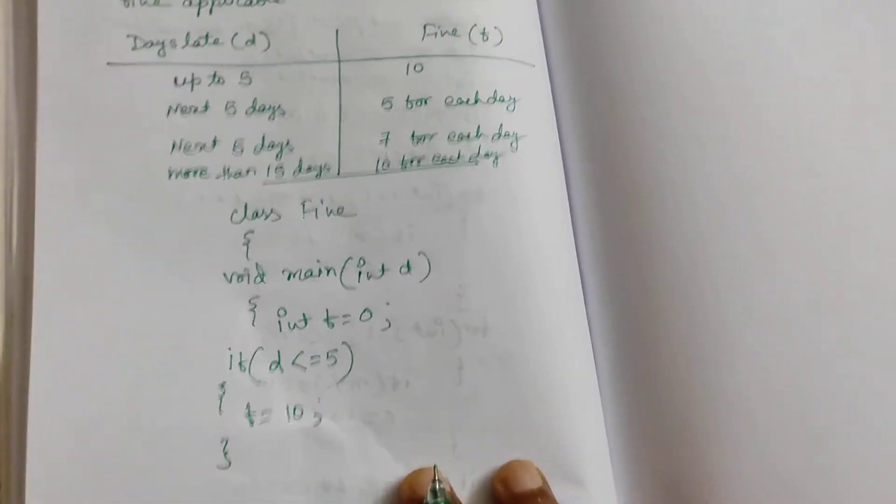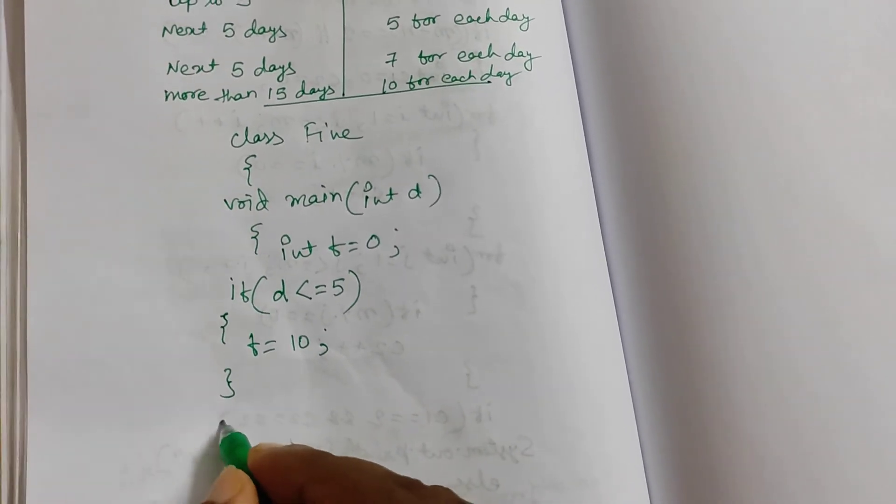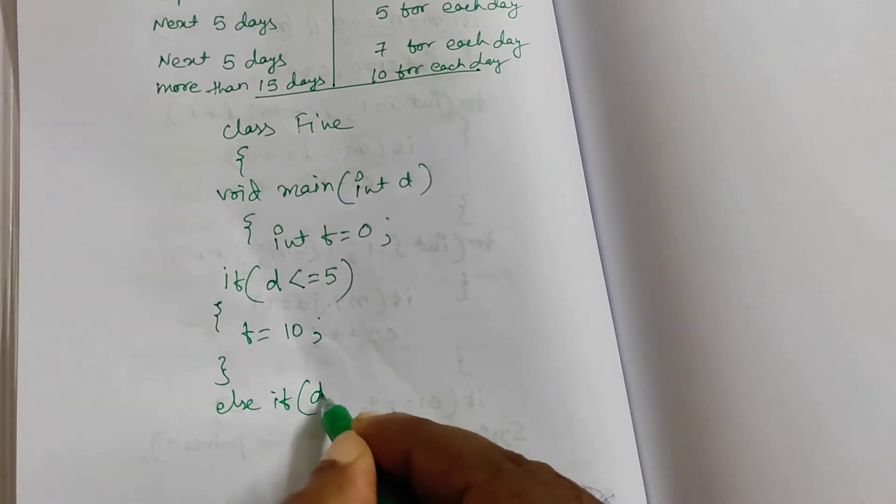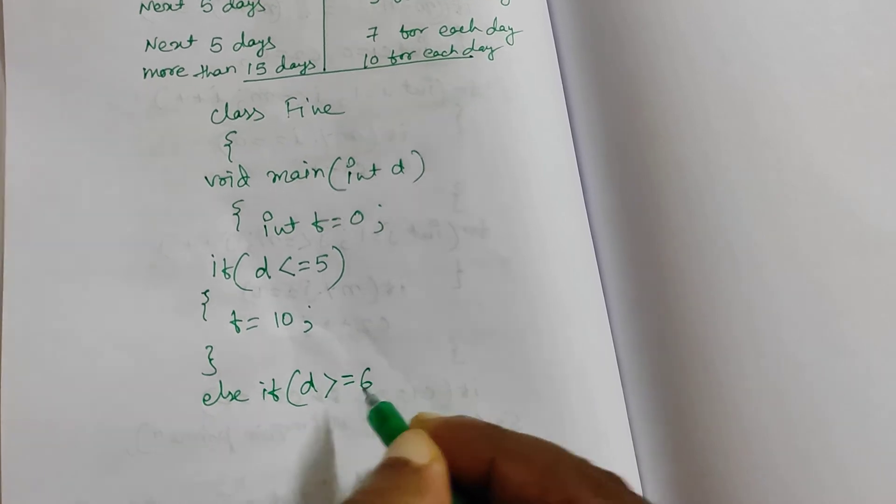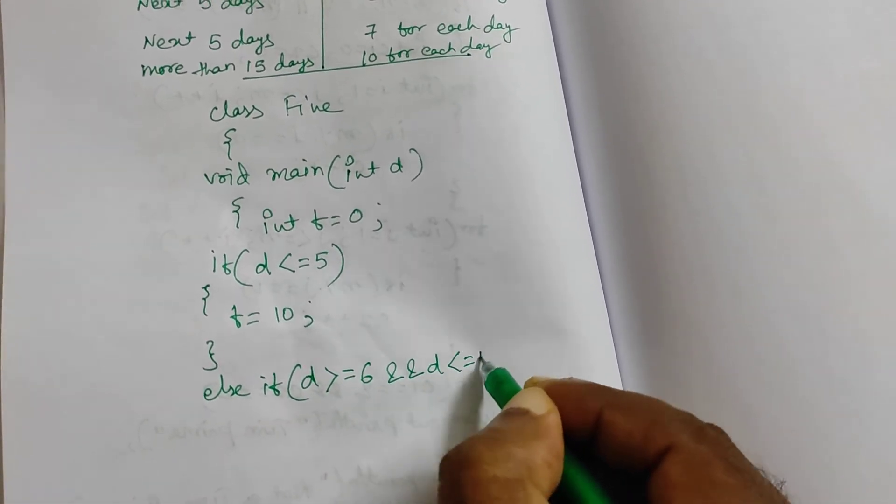So first 5 days, only 10 rupees. Next 5 days, you have to pay 5 rupees per day. So else, if d is greater than equal to 6, and d is less than equal to 10.